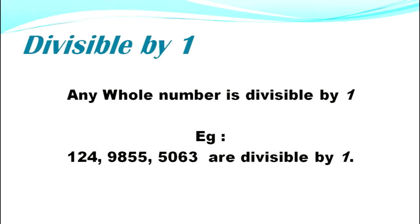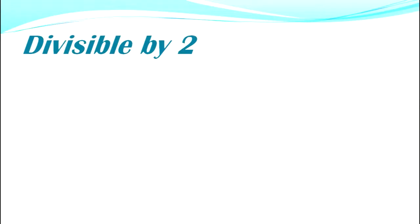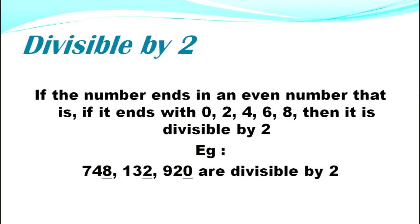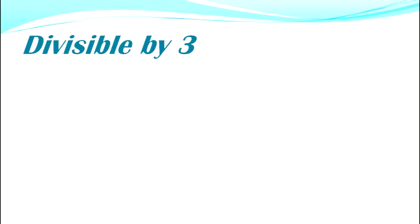Divisible by two: if the number ends in an even number — that is, if it ends with 0, 2, 4, 6, or 8 — then it is divisible by two. Examples: 748, 100, 32, and 920 are divisible by two.